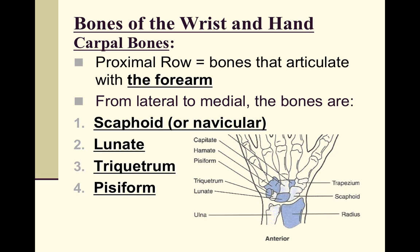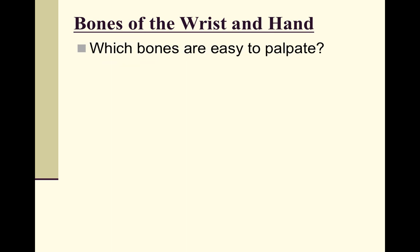The third bone in the proximal row is the triquetrum — a somewhat unusual name, but it sits right next to the lunate. Sitting on top of the triquetrum is the pisiform, which you can feel prominently on the pinky side of the wrist; just feel from the wrist up into the hand and you will find that bump.